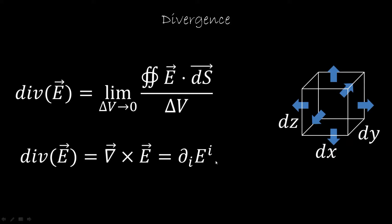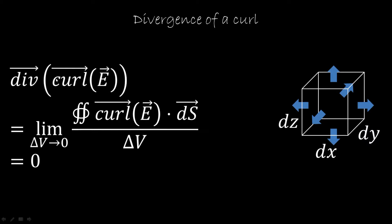You can also write it in index notation. The next question is: what is the divergence of a curl? We saw that the divergence is an infinitesimal closed surface integral, and we saw that the closed surface integral of a curl is zero. Therefore, the divergence of the curl is always going to be zero.